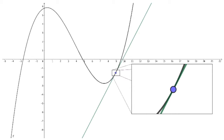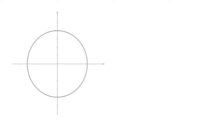Let's think about how this works in a slightly more complicated situation. Here is a circle with radius r. The formula for the relation between x and r is x squared plus y squared equals r squared, where r is a constant number. You probably noticed that this is not a function. For example, when x equals 0, there are two corresponding y values. Therefore, this is not a function.